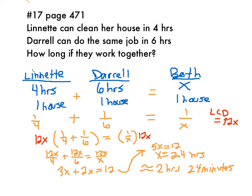And we want to know how long will it take them if they work together, and they're going to clean one house. So to turn this into a rate, Lynette's rate is one-fourth — she can clean a quarter of a house in one hour. We're just taking the four hours and one house and inverting it to be one house per four hours. Daryl's rate is one-sixth, or one-sixth of a house per hour.